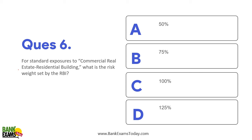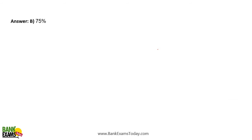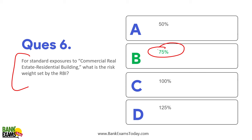For standard exposure to commercial real estate residential building projects, what is the risk weight set by the RBI? This is very important — it used to be 100%, but now it has been reduced to 75%. This means these projects will get more financing from banks, because with a lower risk weight, loans become cheaper for these projects.